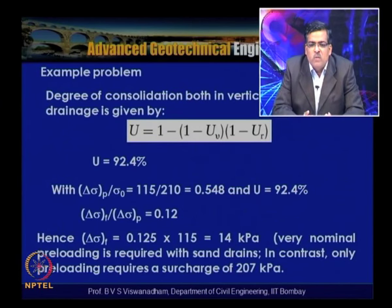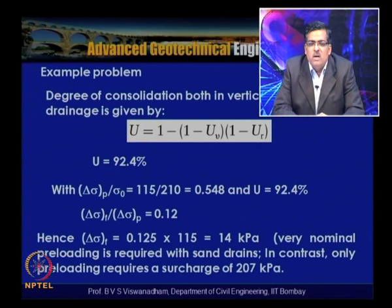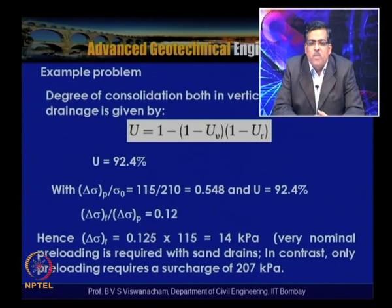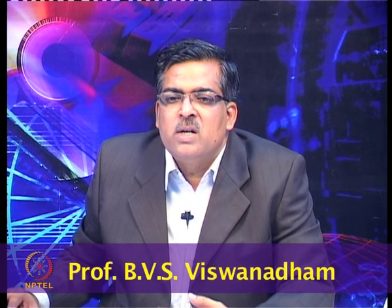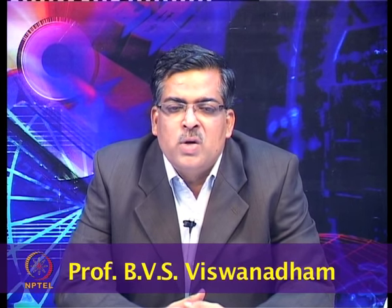Very nominal preloading is required when sand drains are provided — only about 14 kPa — in contrast to 207 kPa required with preloading only. In some cases, people combine vacuum consolidation with preloading, which further reduces the required preloading height and enables consolidation to occur in a relatively shorter duration, combining both vacuum and preloading effects.